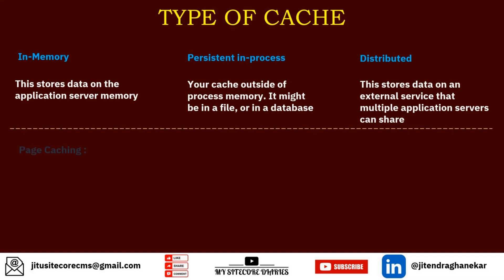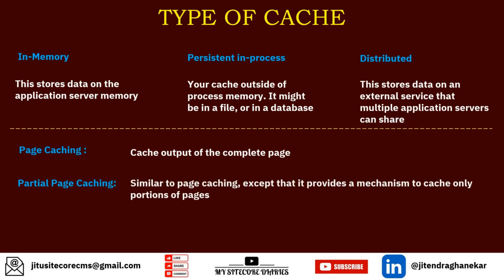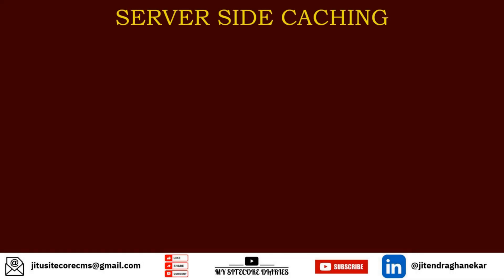Now, depending on what we are storing, cache also varies. You have page caching, where you cache the output of a complete page. Then you have partial page caching, which is similar but caches only a certain portion of the page, not the whole page. And you have data caching, where you store frequently used objects or data. The difference between page and data caching is that page caching typically involves HTML, whereas data caching involves pure data structures.